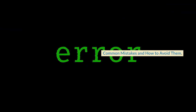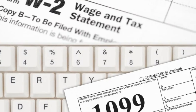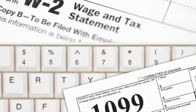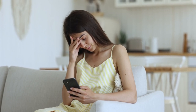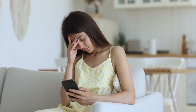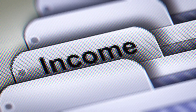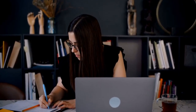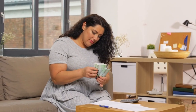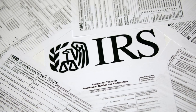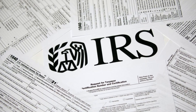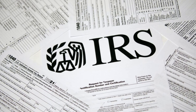Common Mistakes and How to Avoid Them. Stepping into the world of W-2s and 1099s can be like navigating a minefield if you're not careful. First up — not reporting all your income. You might think, do I need to report that small freelance gig? Absolutely. Every dollar earned, whether from a W-2 or 1099 job, must be reported. The IRS receives copies of all your 1099s and W-2s, so omitting any income is a red flag.